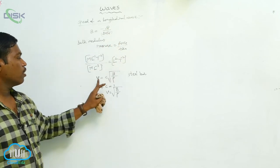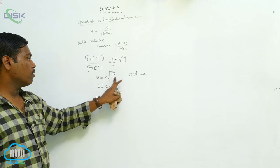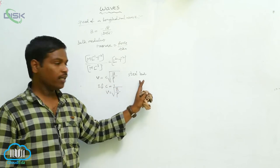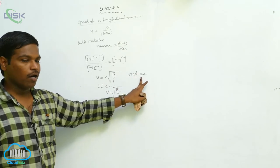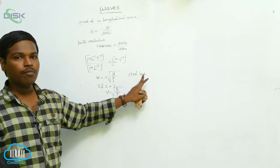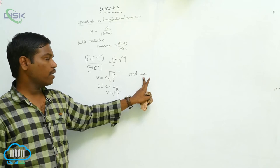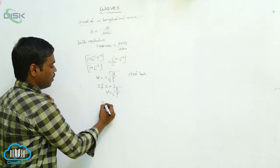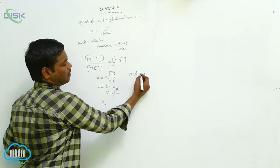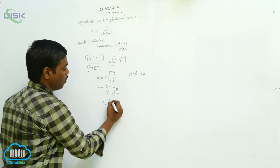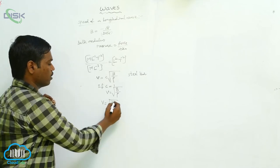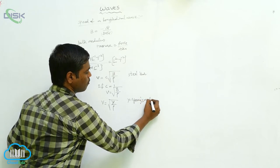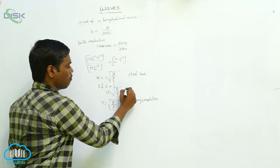The speed of a longitudinal wave v is equal to the square root of B by rho, where B is the bulk modulus and rho is the density. If we take a steel bar, there are no volumetric expansions — only length expansions. So in place of the bulk modulus, we use the Young's modulus Y, and the speed becomes v equals square root of Y by rho.